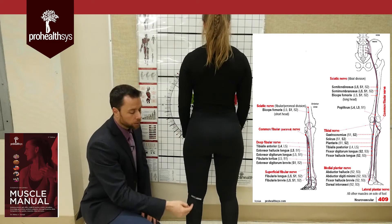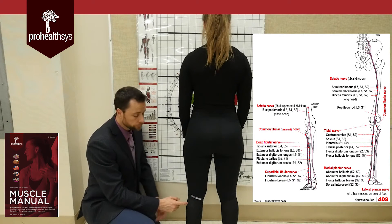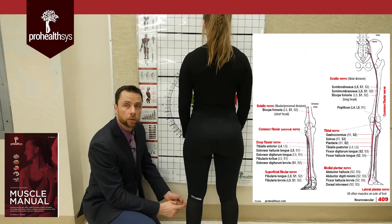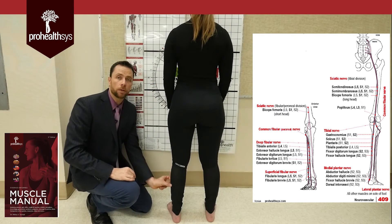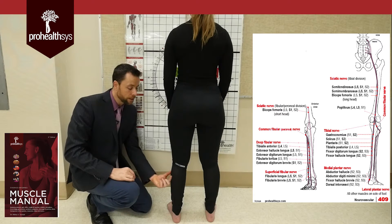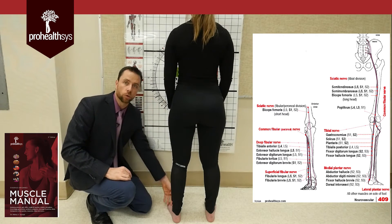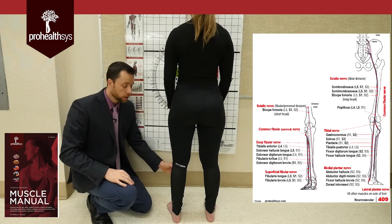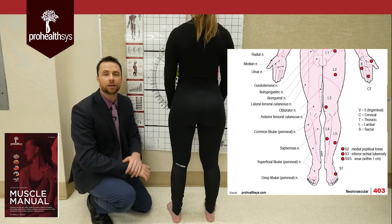The common fibular nerve runs down, branches laterally around the neck of the fibula, and splits into two nerves: the superficial and deep peroneal — or superficial and deep fibular — nerves. The superficial fibular nerve stays in the lateral compartment, supplying fibularis longus and fibularis brevis, as well as cutaneous sensation over the dorsum of the foot. The deep fibular nerve goes into the anterior compartment, supplies all the muscles of the anterior leg, and provides cutaneous innervation between the big toe and second toe — a unique innervation.